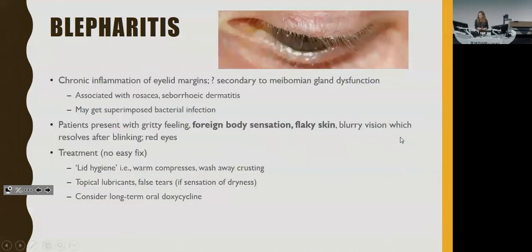Blepharitis is chronic inflammation of the eyelid margins — one of the conditions predisposing to meibomian gland obstruction and chalazion. I like to think of it as dandruff of the eyelids: patients present with flaky skin and a gritty or foreign body sensation in the eye. Treatment involves lid hygiene, topical lubricants, and artificial tears. Artificial tears will rarely be wrong in Ophthal, since patients often have general eye irritation symptoms. You can also consider long-term oral antibiotics, similar to acne treatment.